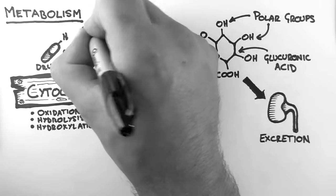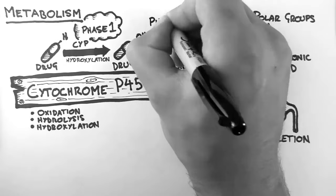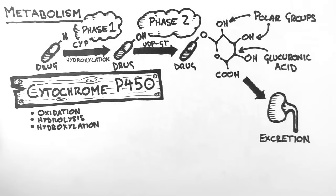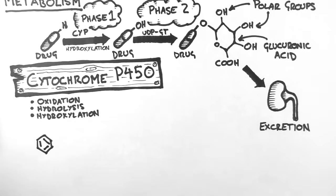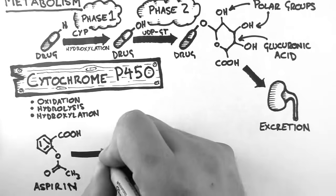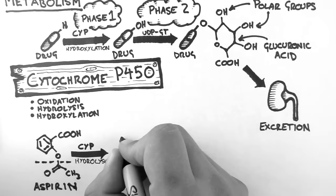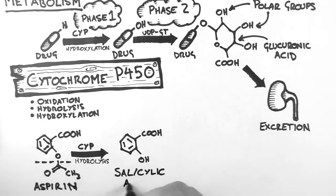We call this first part of the process phase 1 metabolism, and the second part of the process we call phase 2 metabolism. Let's have a look at an example now. This molecule here is aspirin, or more correctly, acetylsalicylic acid. The phase 1 metabolism of aspirin involves a cytochrome P450 hydrolysing the aspirin molecule, and the resultant product is salicylic acid.